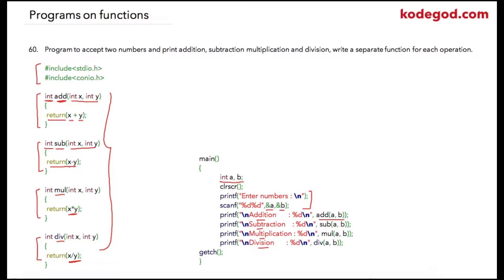When I call 'add(a, b)', the controller will jump to execute the add function. Suppose the user has entered 10 and 20 — a copy of 10 and 20 will be passed. The compiler declares an additional set of integers: x is equal to a and y is equal to b. Here 'a' and 'b' are local variables of the main function, and 'x' and 'y' are local variables of the add function, so operations will be performed on x and y. Notice that 'a' and 'b' will not be accessible in the add function.